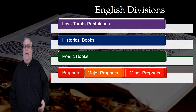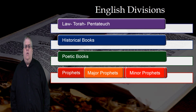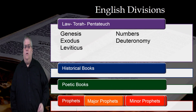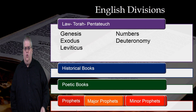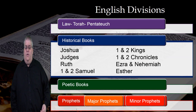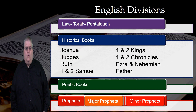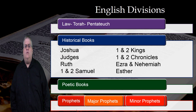Let's go through and list the books in each division. The books of the Torah are Genesis, Exodus, Leviticus, Numbers, and Deuteronomy. The historical books are Joshua, Judges, Ruth, 1 and 2 Samuel, 1 and 2 Kings, 1 and 2 Chronicles, Ezra, Nehemiah, and Esther.